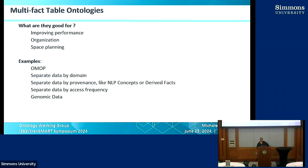The next feature we wanted to expose — and a couple of people have talked about it already — is the multi-fact table. This is a really powerful feature that at our site we just started using heavily. Instead of a single fact table, you can do a partial or full implementation and it's pretty easy to implement. It really helps to improve the performance of i2b2.